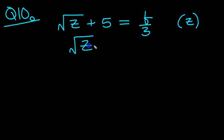So we get root z is equal to b over 3. Leave the root z where it is, and simply move the 5 across the equals and flip the sign to minus 5.